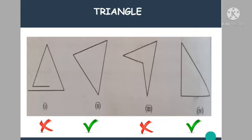The first one is not a triangle because it is not a closed figure. The second one is a closed figure and has three line segments, so it is a triangle. The third one is a closed figure, but there are four line segments, so it is not a triangle. The fourth one is a triangle because it has three line segments and it is a closed figure.